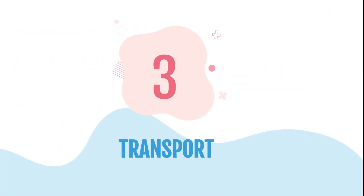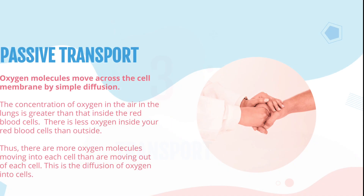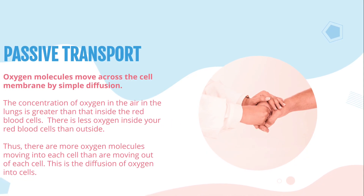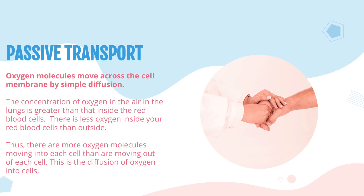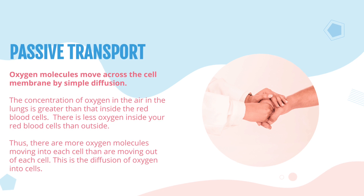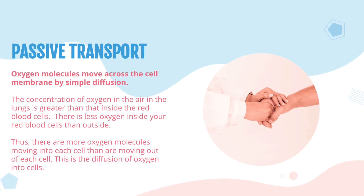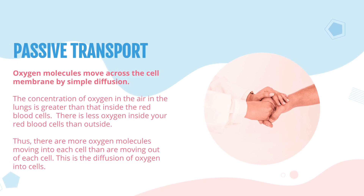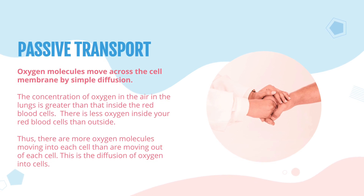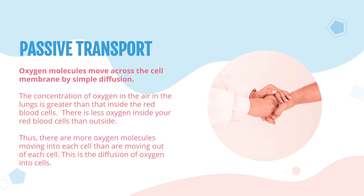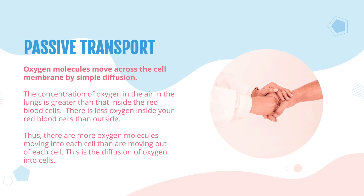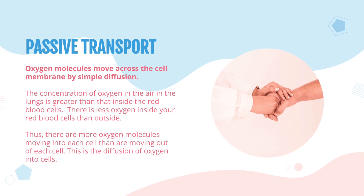Transport. Passive Transport: oxygen molecules move across the cell membrane by simple diffusion. The concentration of oxygen in the air in the lungs is greater than that inside the red blood cells. There is less oxygen inside the red blood cells than outside. Thus, there are more oxygen molecules moving into each cell than are moving out of each cell. This is the diffusion of oxygen into cells.